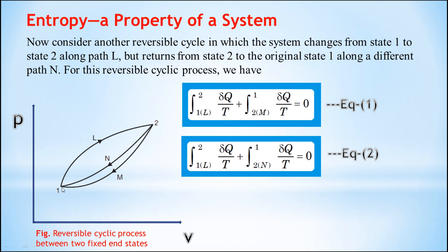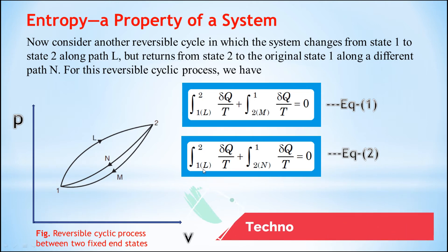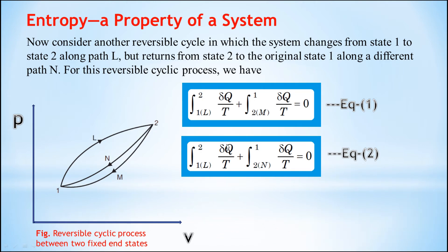For this cycle, the lower limit is 1 and the upper limit is 2, and the forward path is L, so we write the integral from 1L to 2 of δQ/T. The return path is 2 to 1 following path N, so the integral from 2N to 1 of δQ/T equals zero.